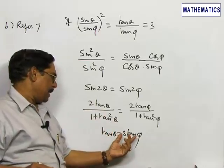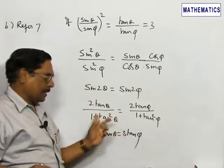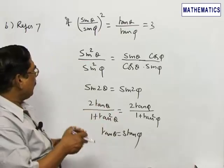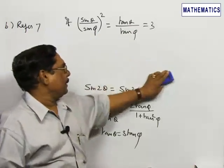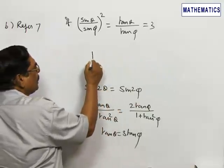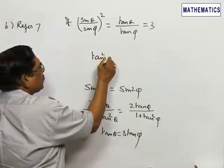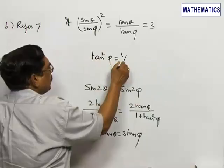Cross multiply and I will arrive at an equation only in tan²φ. After simplification, you get tan²φ = 1/3.